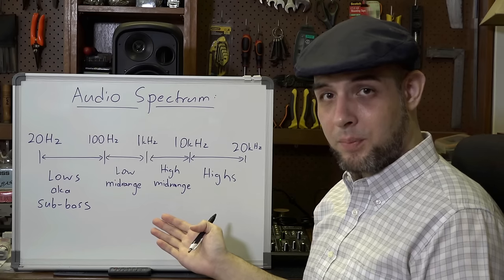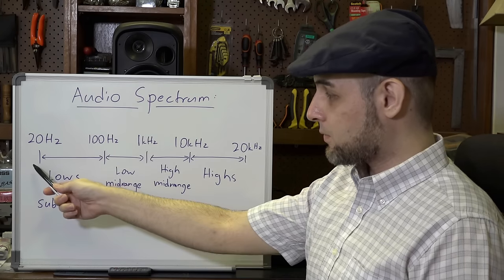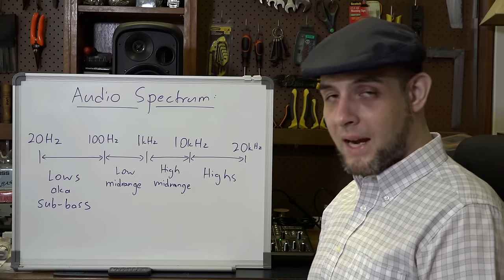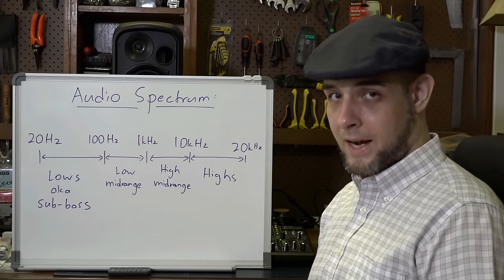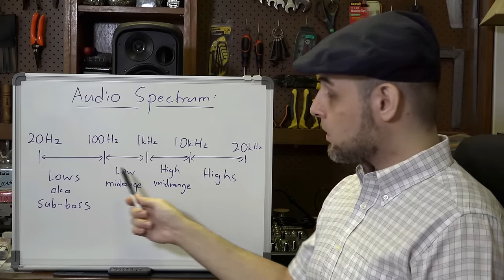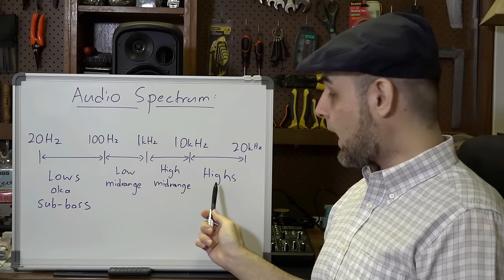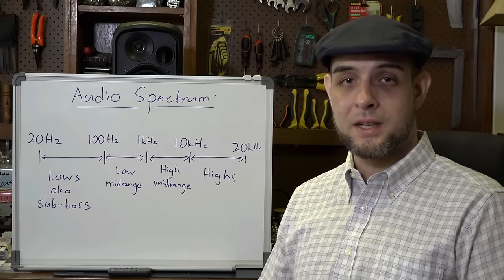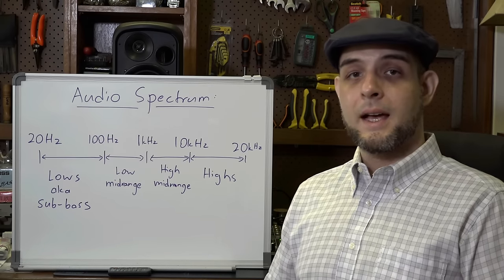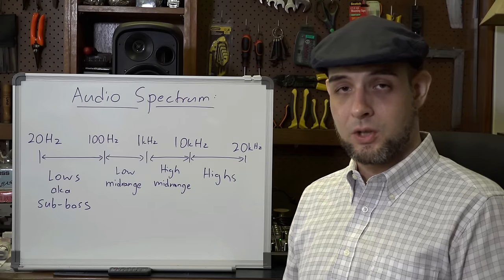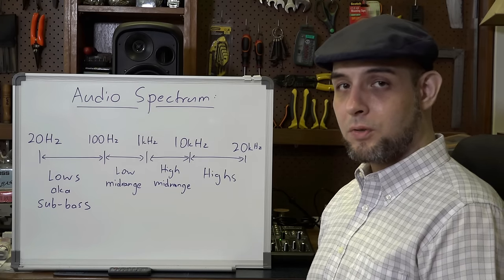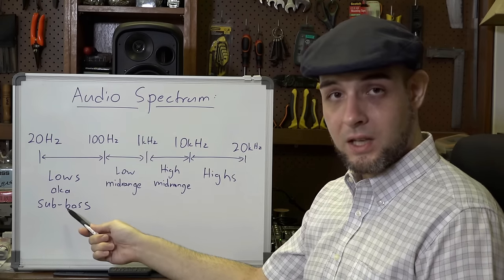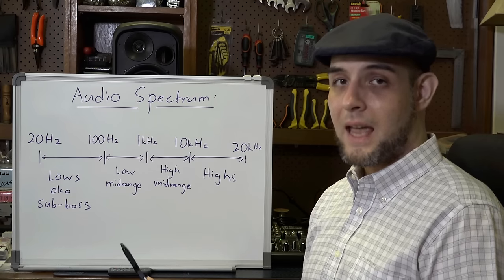As you can see here on my whiteboard, I've got the sound spectrum laid out going from 20 hertz right through to 20 kilohertz. Sound engineers will generally divide the spectrum into four broad areas: lows, low mid-range, high mid-range, and highs. The exact point at which one transitions to the next depends on the instrument and the speaker systems you're using, but in general a subwoofer is optimized to function at around 100 hertz and below.